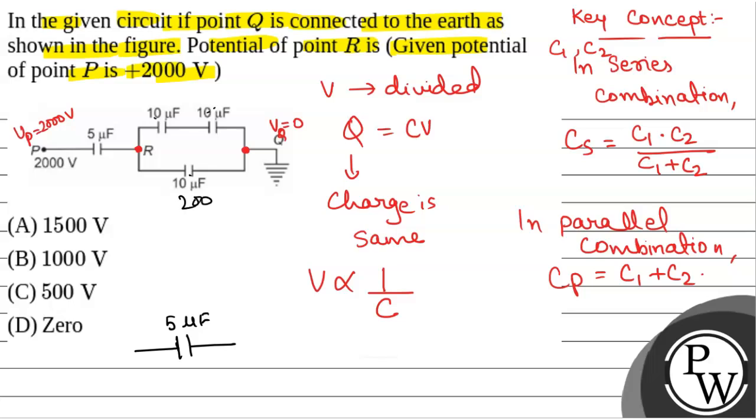That is 200 by 20 plus 10. That is 10 and 10 in series, so this will be 5. 10 and 10 in series will equal 5 microfarad because C1 into C2, that is 10 into 10 by 10 plus 10, so 100 by 20, that is 5 microfarad.